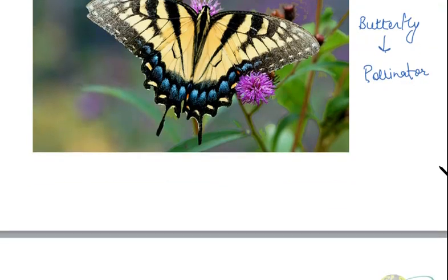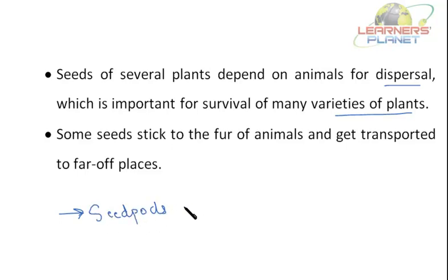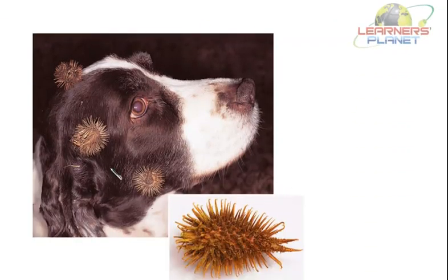There are seeds of several plants that depend on animals for dispersal, which is important for the survival of many varieties of plants. There are some seeds, also called seed pods — seed pods with hooks. There are some seeds which stick to the fur of animals and get transported to far-off places. Here you can see a seed pod with hooks that sticks to the animal's fur or skin and is then transported to far-off places.